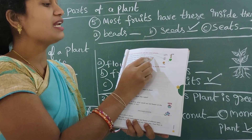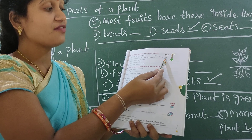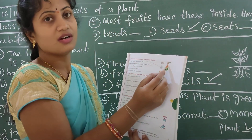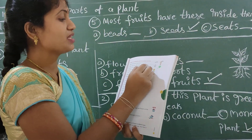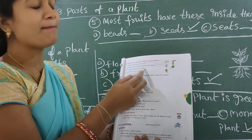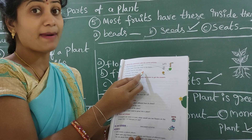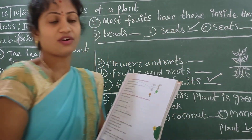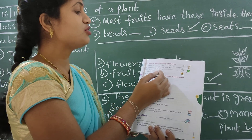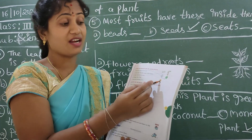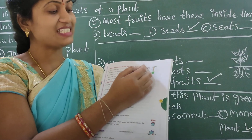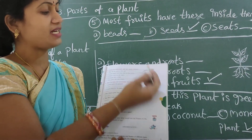It takes water from the roots to the leaves - that is the stem. It makes food for the plant - that is the leaf. It changes into a fruit - that is the flower. Flower changes into a fruit. These grow into new plants - that is seeds. Seeds grow into a new plant.